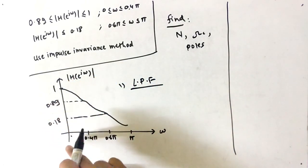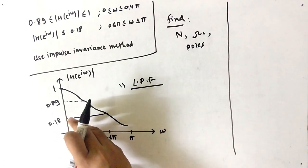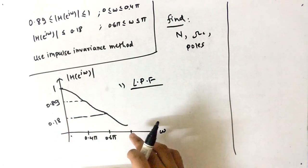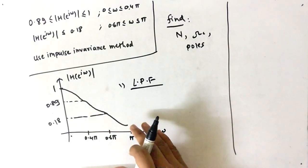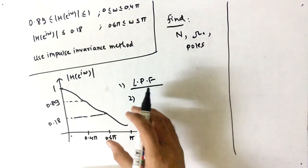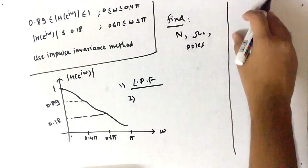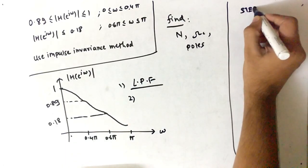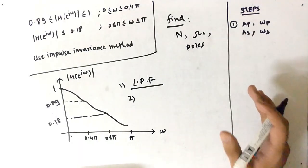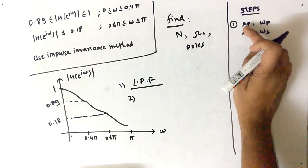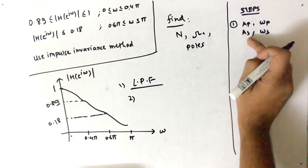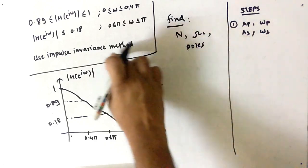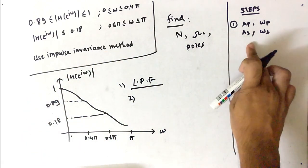At lower frequencies it is passing and at higher frequencies it is attenuating — confirming it is a low pass filter. Now let's look at the steps to solve the IIR filter. In the first step you have to find the passband attenuation, stopband attenuation, passband frequency, and stopband frequency, which you can find from the graph.